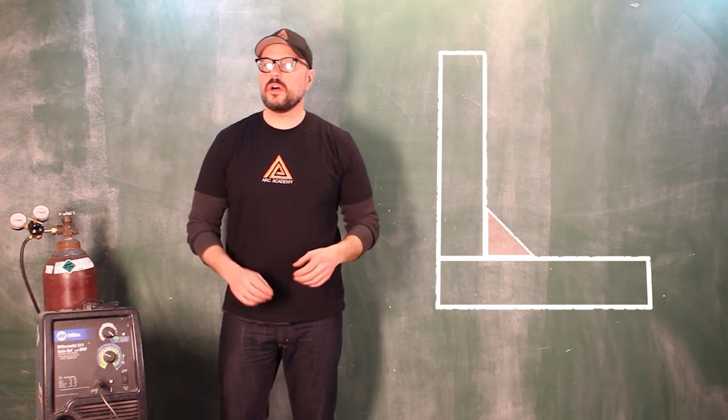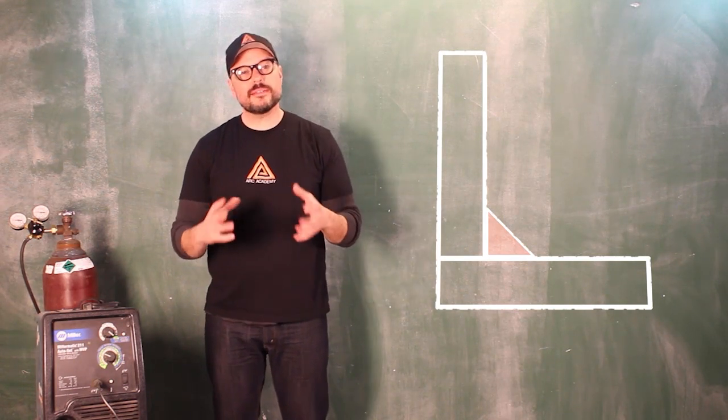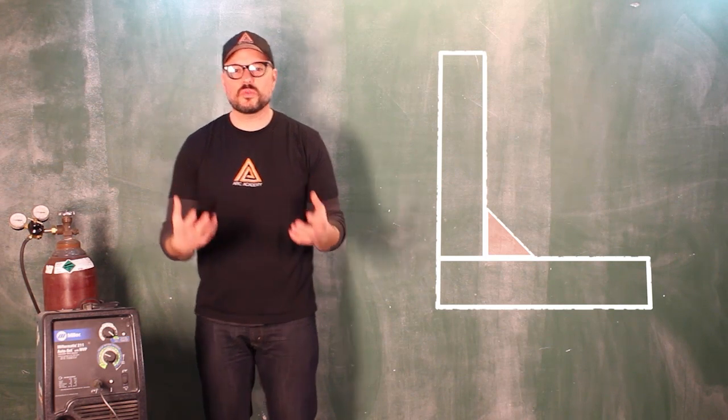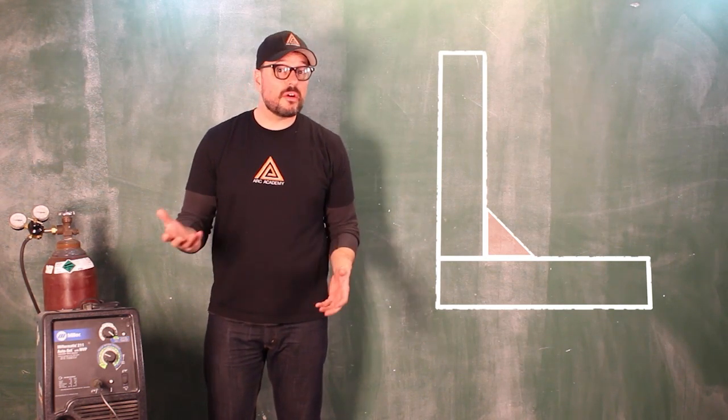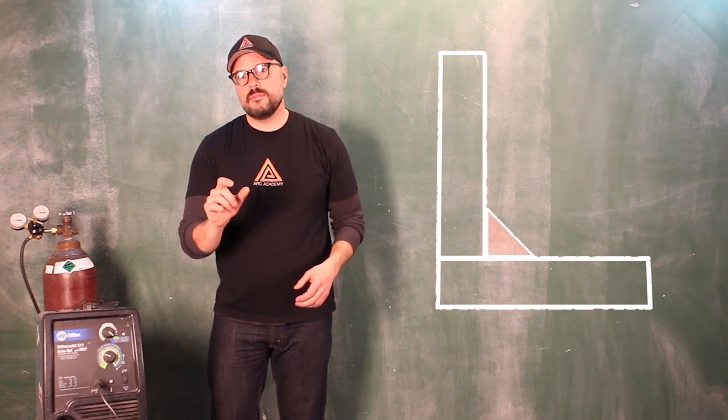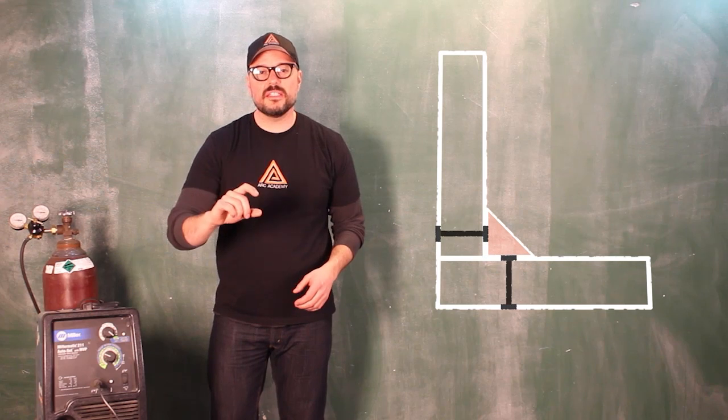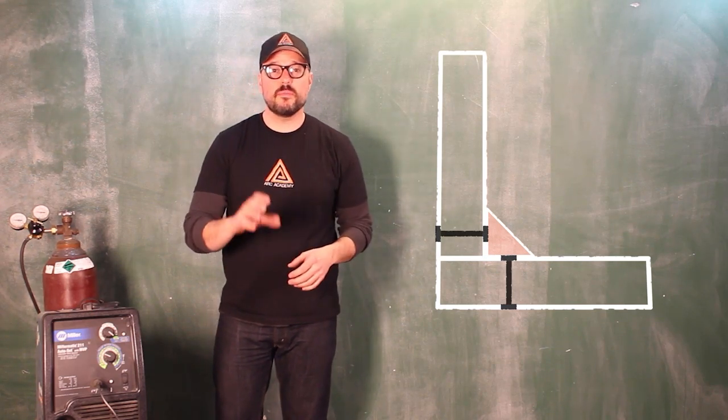The size of the weld is really all going to depend on what you're making. If you're making something that isn't going to be that structural like a coffee table, maybe a lamp, yard art, you are going to want the leg of the bead to be equal to the thickness of the material that you're welding on. This is going to be the minimum size of the bead that you want.